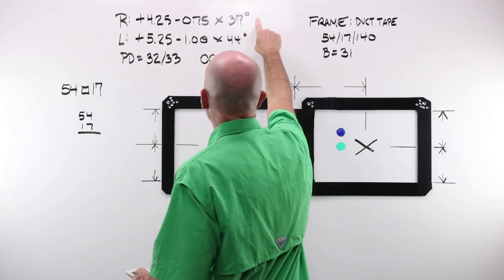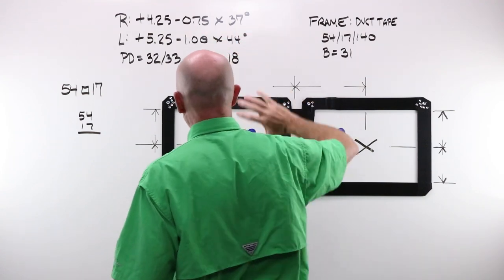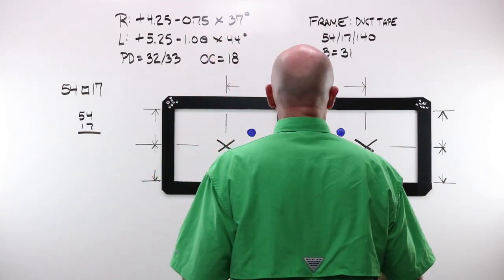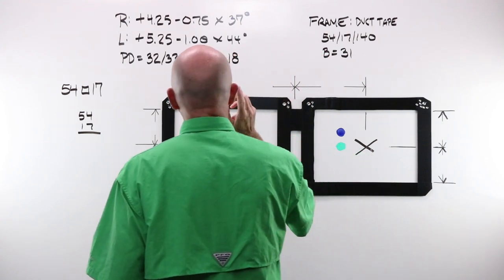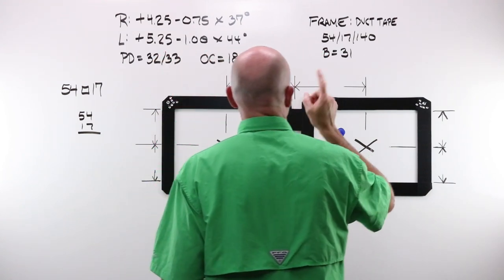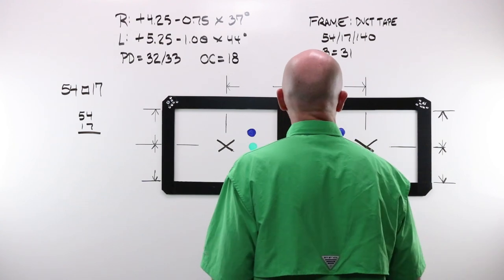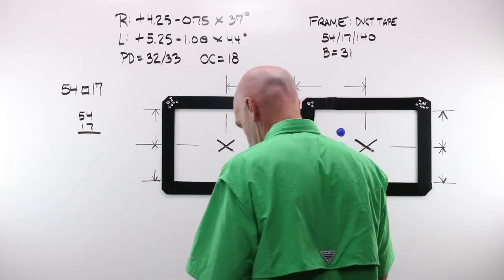Nothing new, nothing special there. I do have a cylinder and an axis. Obviously, I'm going to have to keep my lens from rotating around. I've got a monocular PD. I do have an OC height. I do have a B, so I'm going to need to figure some stuff out here.